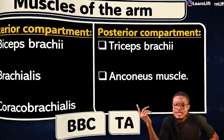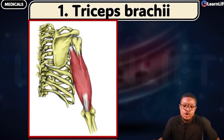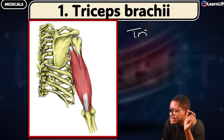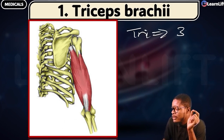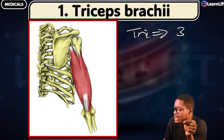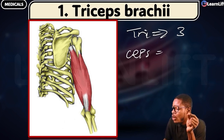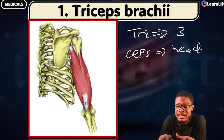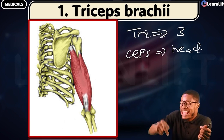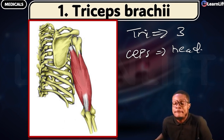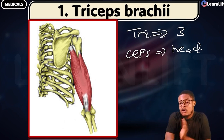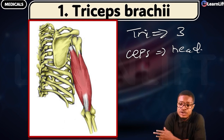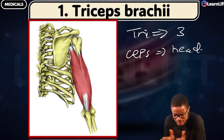From the name 'Triceps Brachii,' you should already understand something. 'Tri' means three, and 'ceps' means head. So your triceps brachii has three heads. 'Brachii' has to do with the arm. And where is it? It's in the posterior compartment of the arm — that's where you find your triceps brachii.